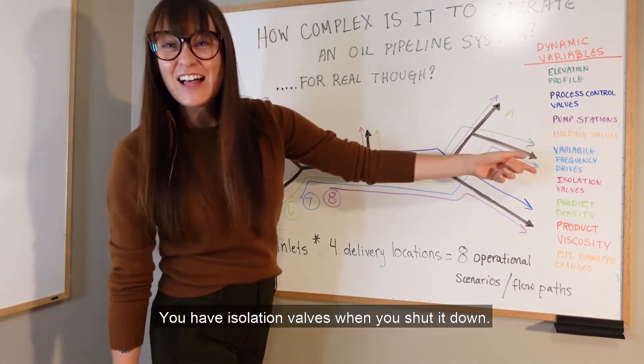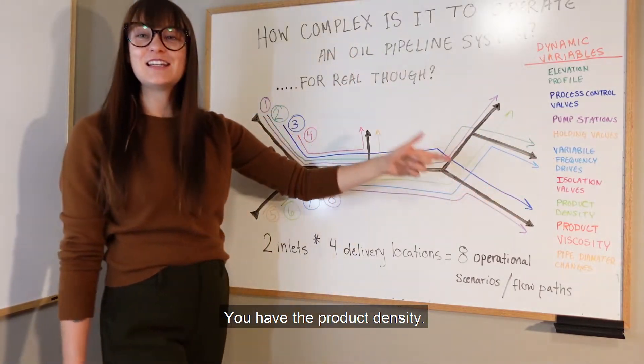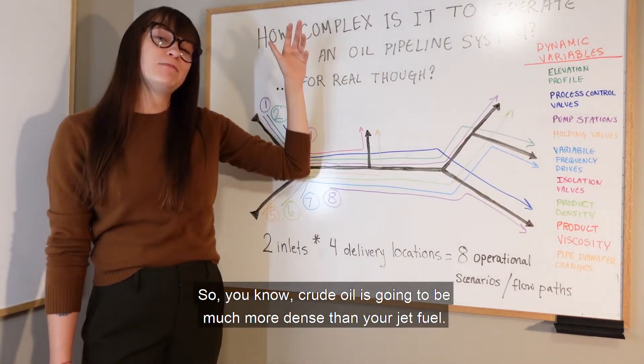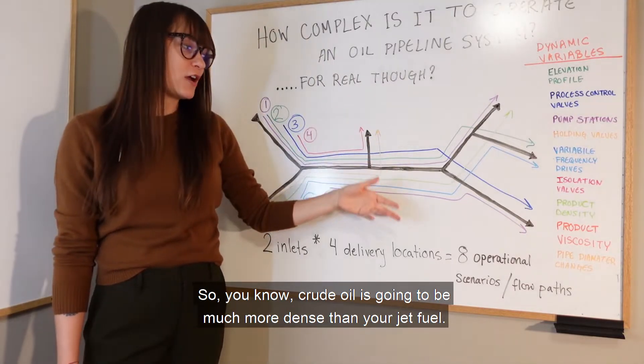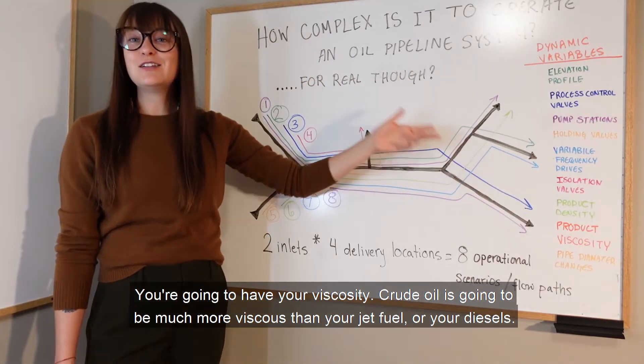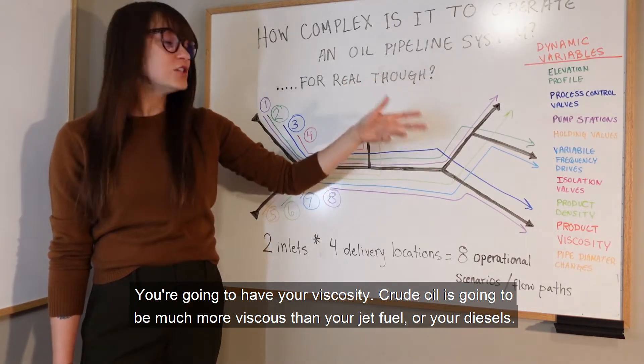You have isolation valves when you shut it down. You have the product density. Crude oil is going to be much more dense than your jet fuel. You're going to have your viscosity. Crude oil is going to be much more viscous than your jet fuel or your diesels.